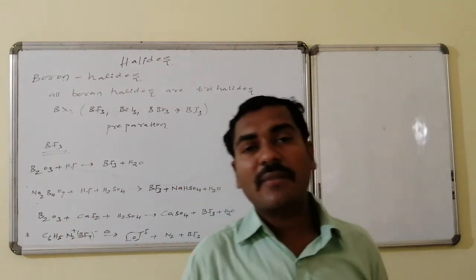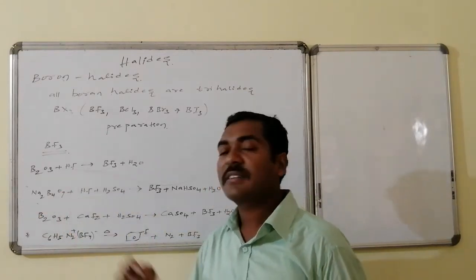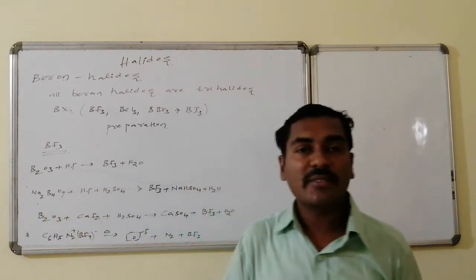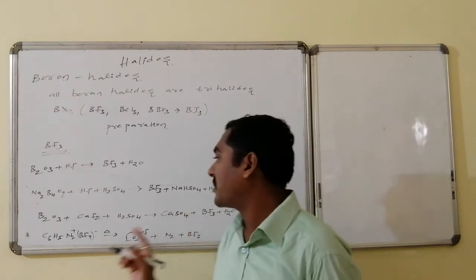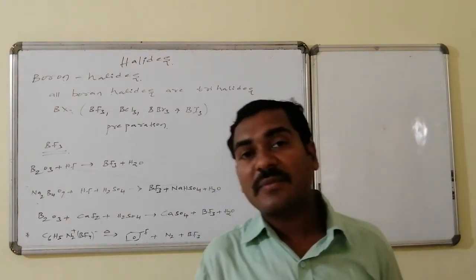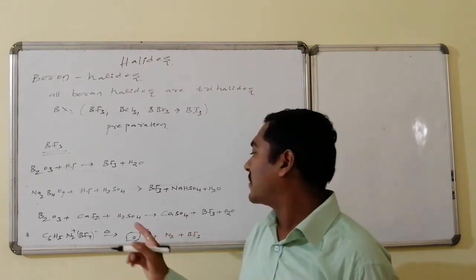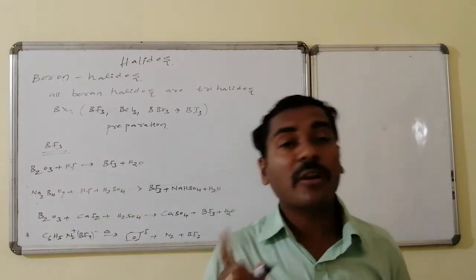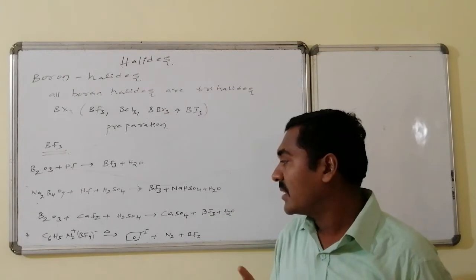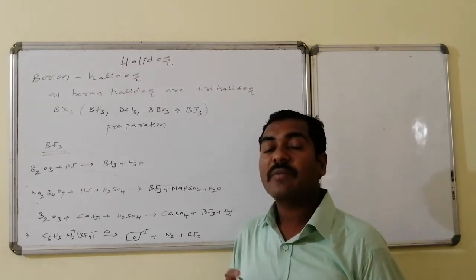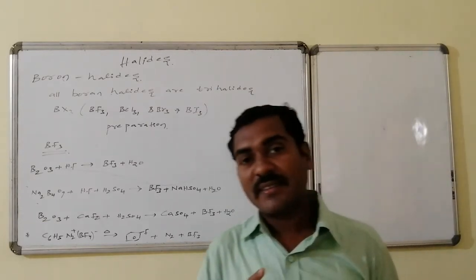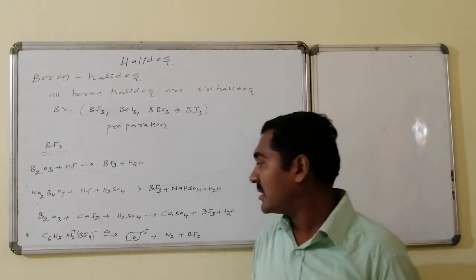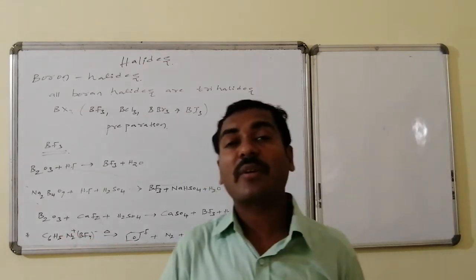Similarly, boron reacting with HF using sulfuric acid: sodium bisulfate formation occurs and the electronegative fluorine combines with boron to form BF₃ followed by water. Also, boron trioxide reacting with calcium fluoride followed by sulfuric acid leads to calcium sulfate, and the HF formed similarly produces BF₃ and water. To get pure BF₃, we use benzene diazonium borofluoride, which on heating undergoes rearrangement to form fluorobenzene, N₂, and BF₃.